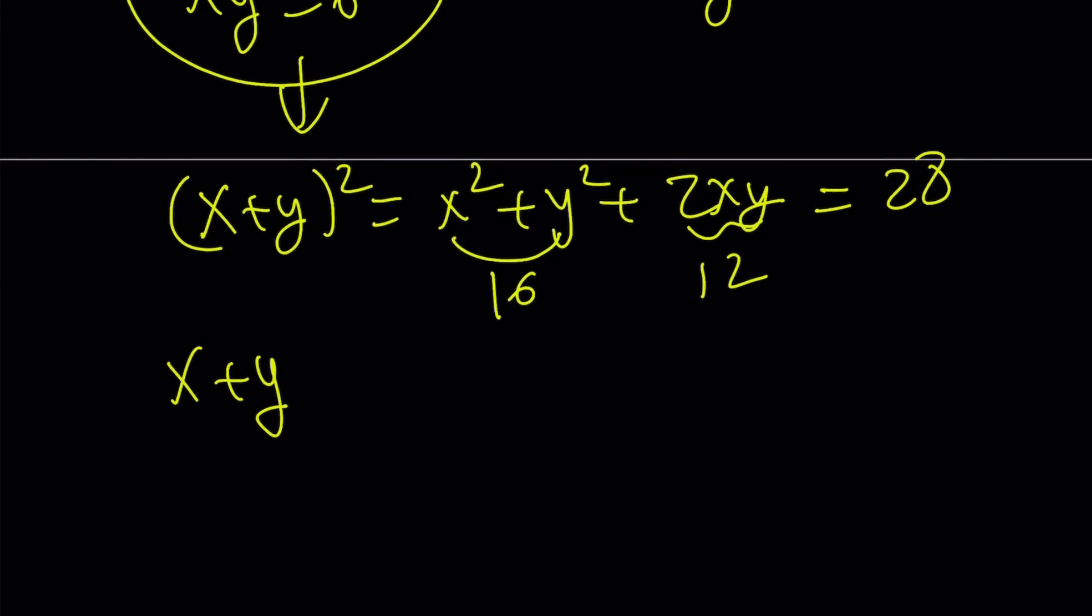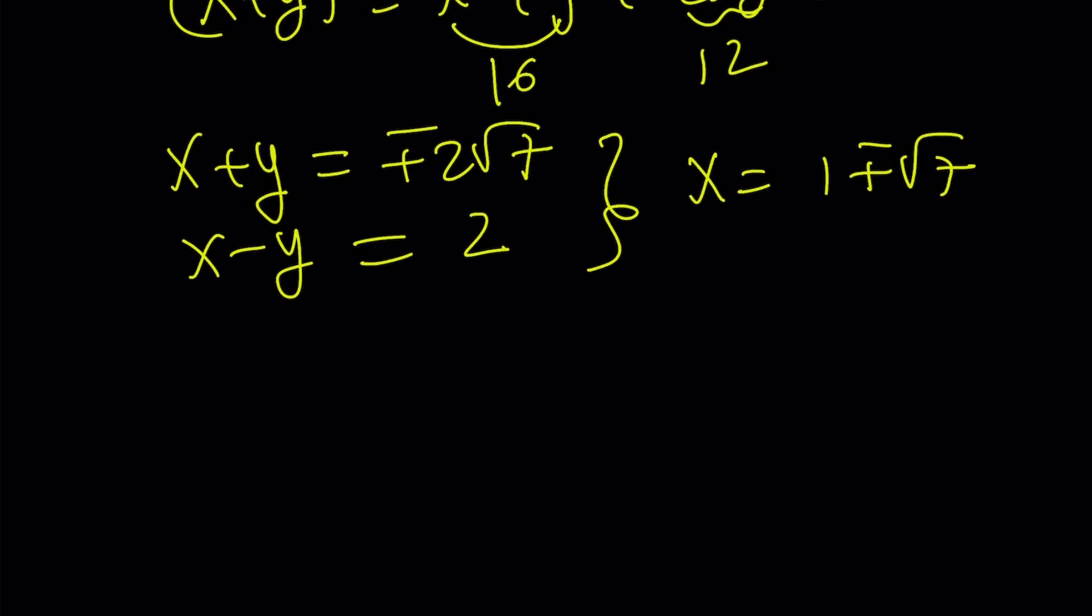From here, if you take the square roots, x plus y is going to be plus minus 2 root 7. Along with x minus y equals 2. You're going to get the same solutions as before. x is going to be 1 plus minus root 7. If you use the other two equations, you're going to get negative 4 plus minus 2 root 2i. And that's going to be it for the solutions.